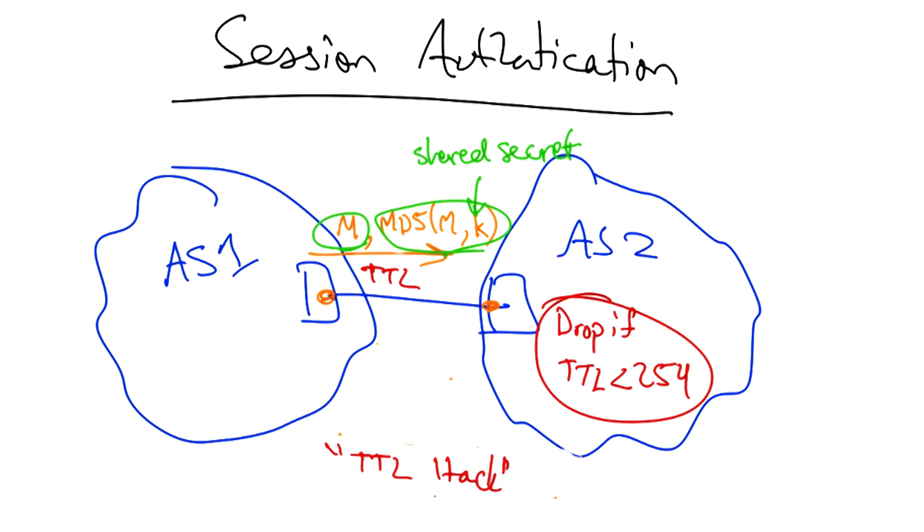Another way to guarantee session authentication is to have AS1 transmit packets with a TTL of 255 and have the receiving AS drop any packet that has a TTL less than 254.